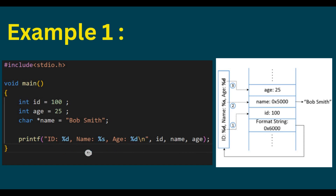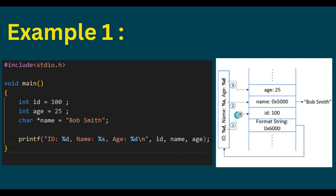Whatever starts with a percentage sign is called a format specifier. So %d, %s, and %d are called format specifiers. The id, name, and age are called optional arguments. Now what printf does is it will scan this format string, and whenever it encounters a format specifier, it will call the va_arg function. In the va_arg function, there is something called va_list, which will be pointing to the first optional argument — in our case, pointing to id.